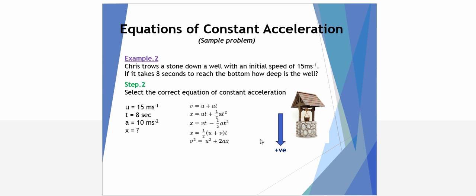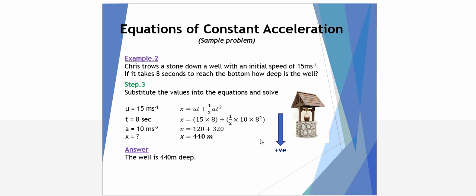We again select the correct equation with U, T, A, and X. Only one of those five equations can be used, and it looks like it would be the second one. Step 3 is to substitute the values in and solve. So, X equals UT plus half AT squared. U is 15, T is 8. Half times A of 10 and T squared is 8 squared. Notice the squared is only on the 8, only on the T. That comes out to a depth of 440 metres, quite a deep well.